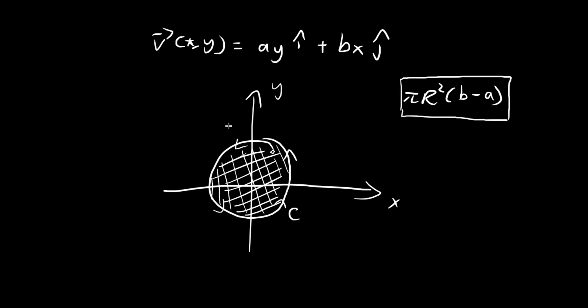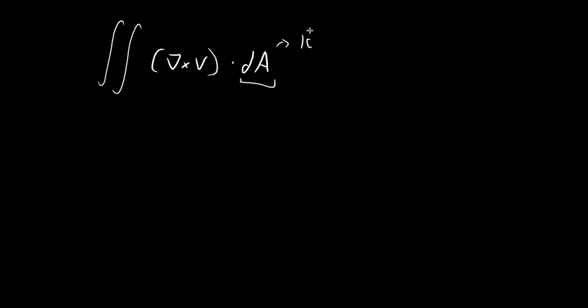So for this case, you can imagine curling your fingers in this direction. You can see that your thumb will point outside of the page. So we'll be pointing in the k direction. And so as dictated by the right-hand rule, this dA will be pointing in the k direction.